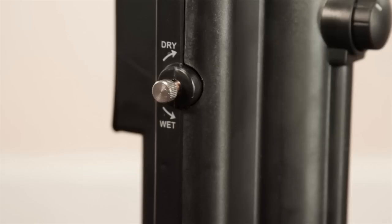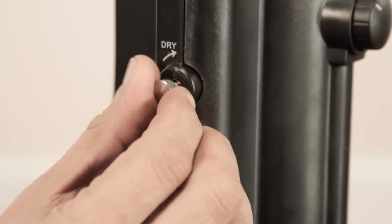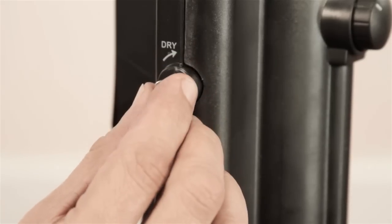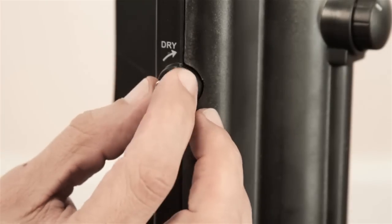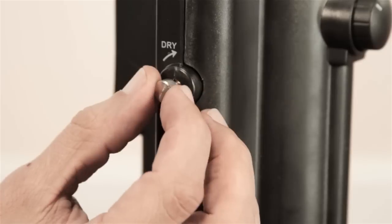The misting function of your Brisa is adjusted by turning the flow control valve on the Brisa fan assembly clockwise to decrease mist density or counterclockwise to increase mist density.